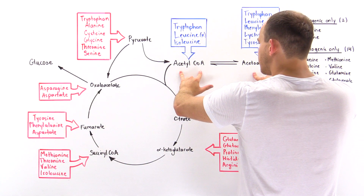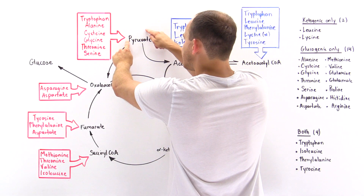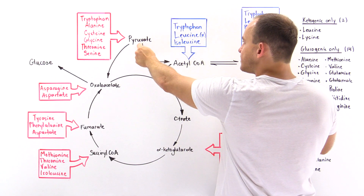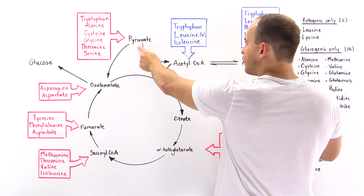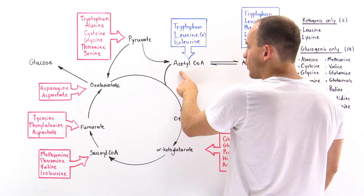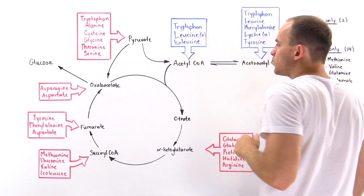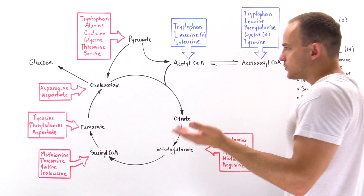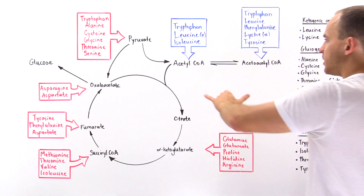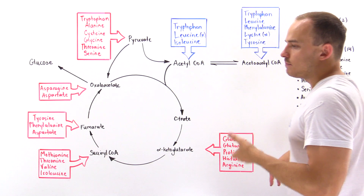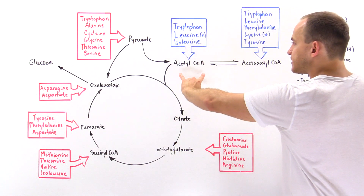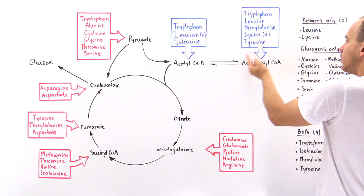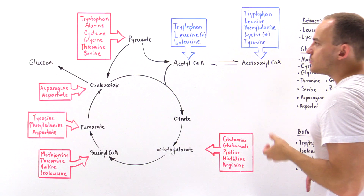If we take pyruvate, the second fate of pyruvate is to undergo decarboxylation. The enzyme pyruvate decarboxylase transforms pyruvate into acetyl coenzyme A. Acetyl coenzyme A can be used to help us generate fatty acids, but we can also use it to help us generate ketone bodies. By transforming acetyl coenzyme A to acetoacetyl coenzyme A, this can ultimately be transformed into ketone bodies.